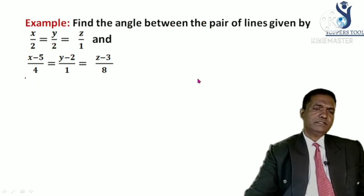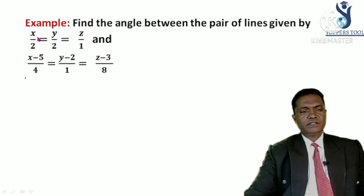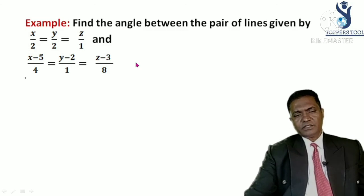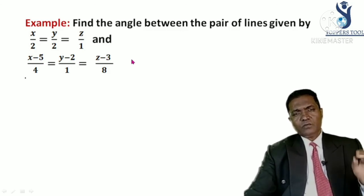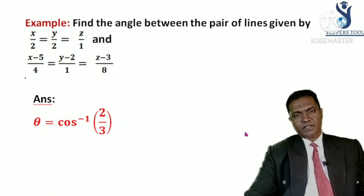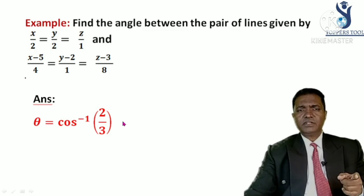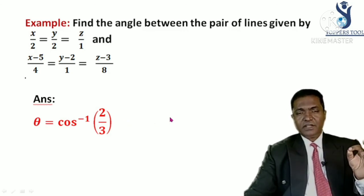There is one more example for your understanding: find the angle between the pair of lines. Note that x/2 = y/2 = z/1 means it passes through the origin with direction ratios 2, 2, 1, while the other line passes through the point (5, 2, 3). Looking at the Cartesian equation you can tell both the point on the line and its direction ratios. Try this yourself — the answer is θ = cos⁻¹(2/3). Please pause and work before checking.